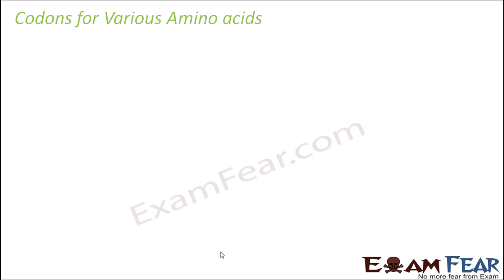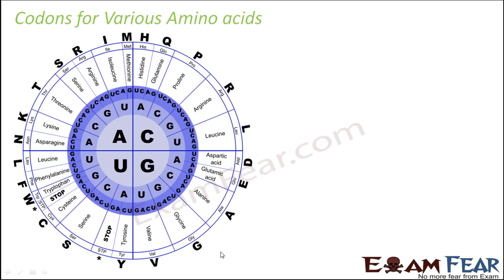Let us look at the codons for various amino acids using the codon chart. There are 64 codons which code for the 20 amino acids. At the center of the chart, you have the four letters denoting the four bases — A, C, G, and U. We use U because proteins are synthesized from mRNA, which has A, C, G, and U. The center denotes the first letter of the codon, the next ring denotes the second letter, and the outermost ring denotes the third letter.